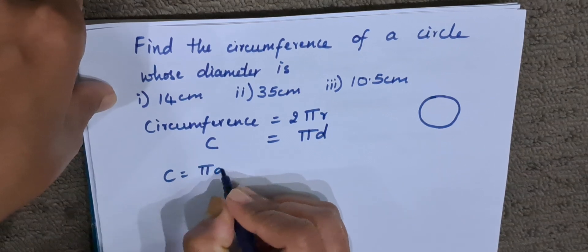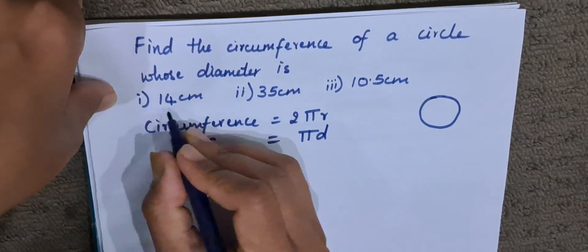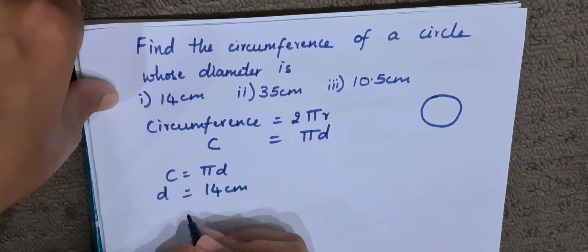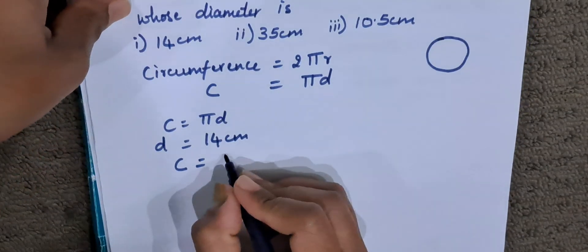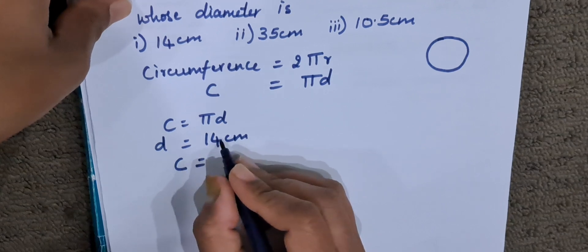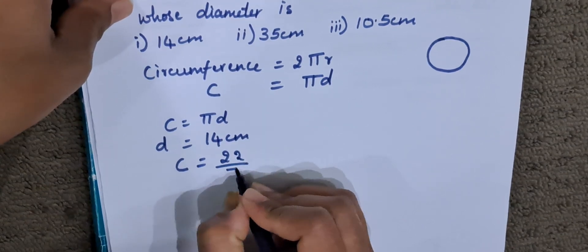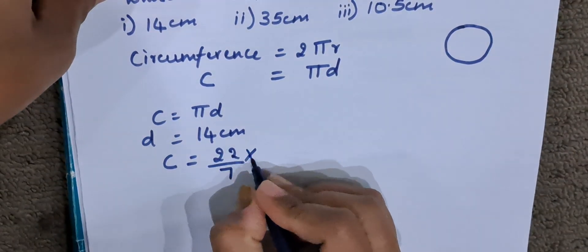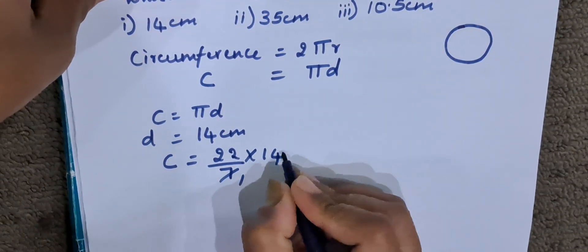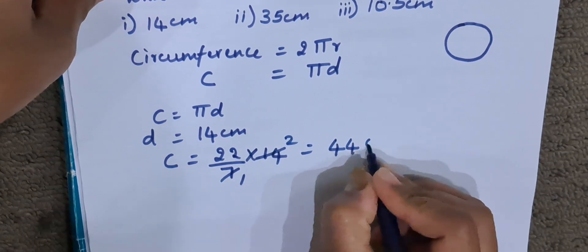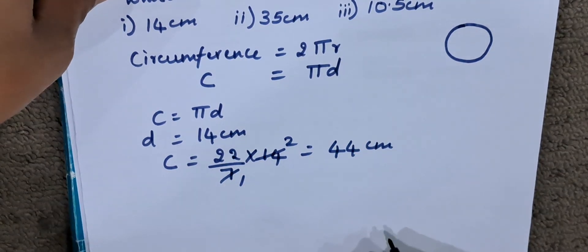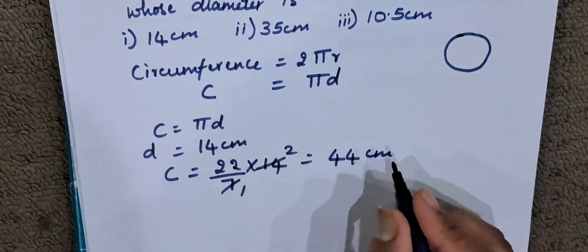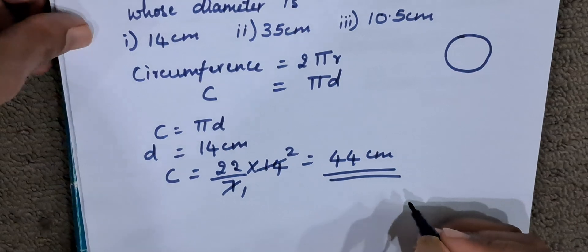Now circumference = πd. In the first problem, the diameter is 14 centimeters. So we will find the circumference: C = π × 14. Pi means 22/7, so that is 22/7 × 14. That gives us 7 ones and 7 twos, which equals 44 centimeters. The circumference of the circle whose diameter is 14 centimeters is 44 centimeters.